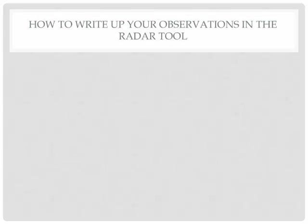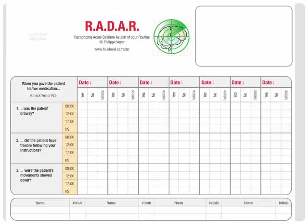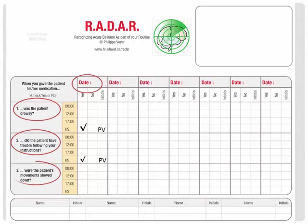How to write up your observations in the RADAR tool: the RADAR form is very simple to fill out. You have the date, the three items, and then you put a checkmark and your initials — yes or no depending on your answer to each item. In this example, I put a checkmark in the yes column for all three items. Then at the bottom, you sign your name and put your initials. It's very simple and straightforward.